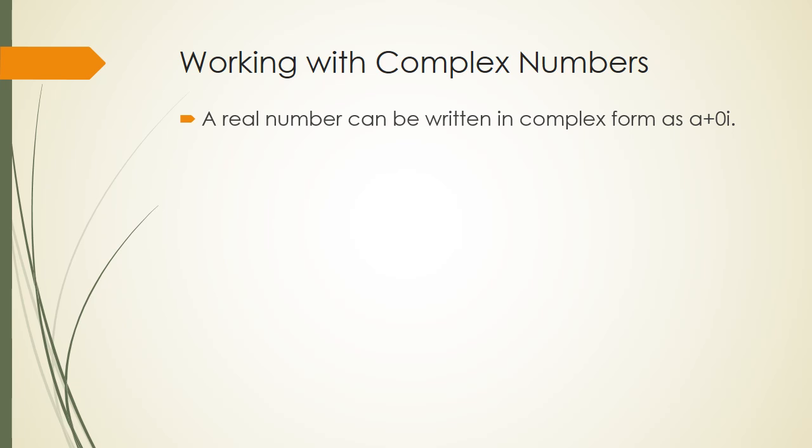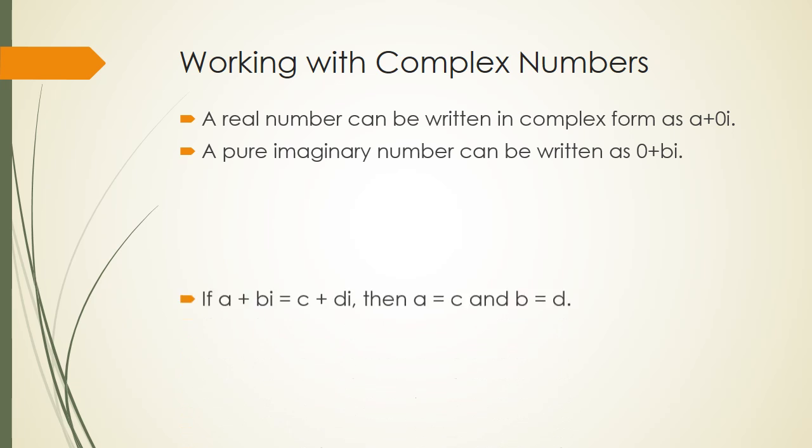A real number can be written as a complex number in the form of a plus 0i. So all real numbers can be written as complex numbers. A pure imaginary number can be written as 0 plus bi. If a plus bi equals c plus di, then a equals c and b must equal d.